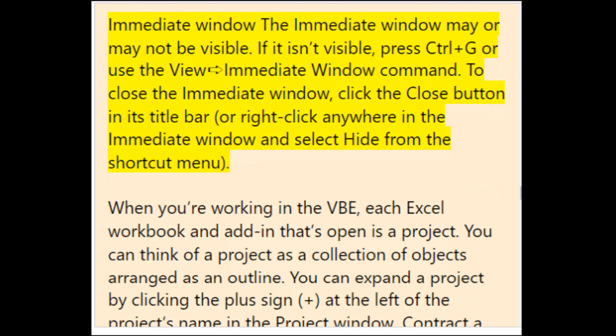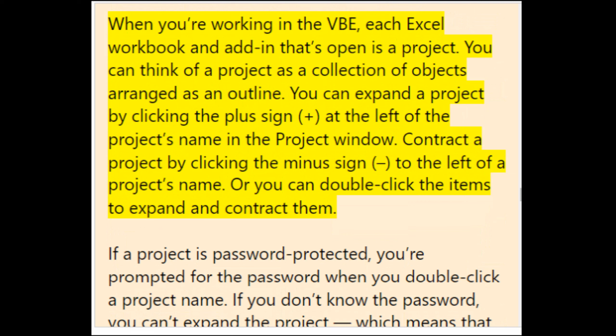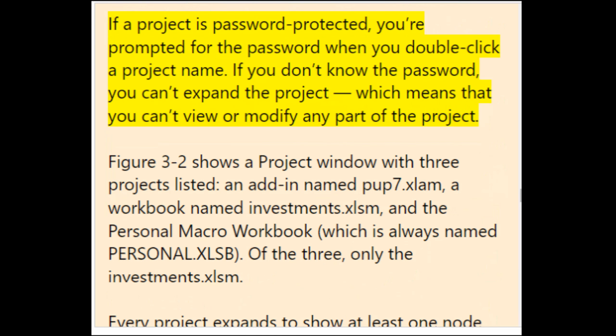The Immediate window may or may not be visible — press Ctrl+G or use View > Immediate Window to open it. When working in the VBE, each Excel workbook and add-in that's open is a project — a collection of objects arranged as an outline. You can expand a project by clicking the plus sign, or contract it by clicking the minus sign, to the left of its name. If a project is password-protected, you're prompted for the password when you double-click the project name; if you don't know it, you can't view or modify any part of the project.